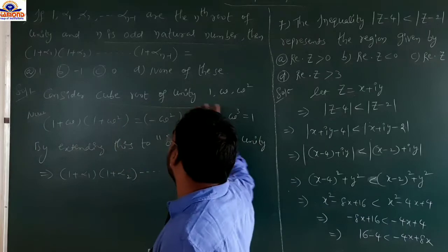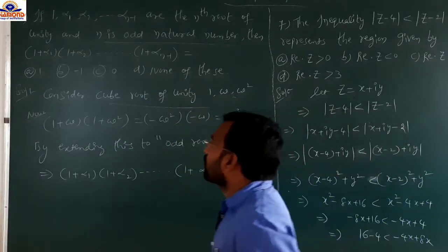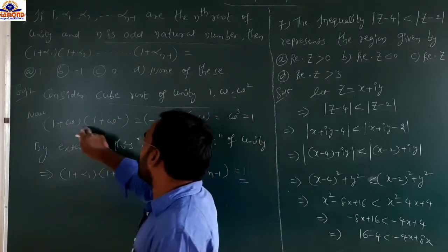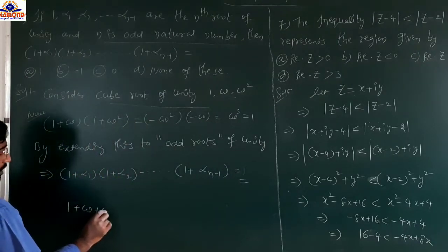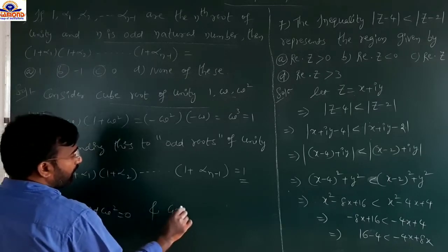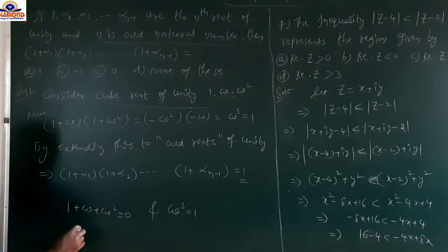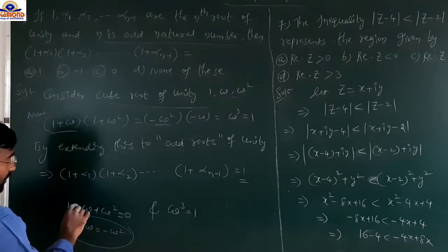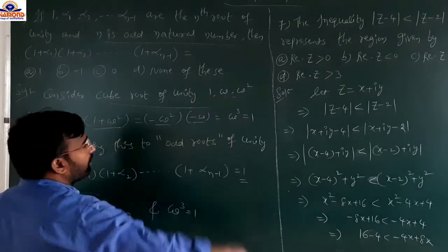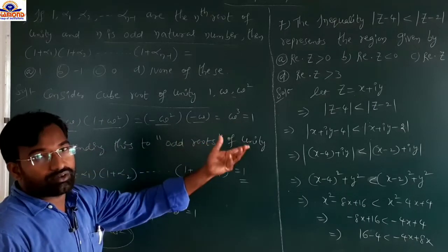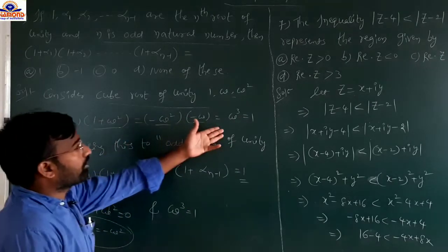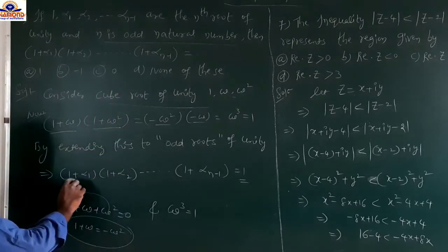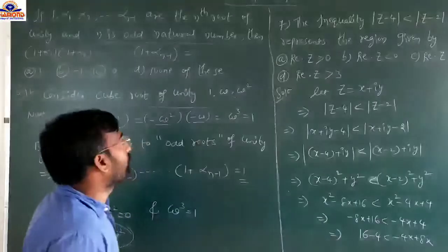Consider the cube roots of unity: 1, ω, ω². We know 1 plus ω plus ω² equals 0 and ω³ equals 1. So 1 plus ω equals minus ω², and 1 plus ω² equals minus ω. Multiplying: (1+ω)(1+ω²) equals (minus ω²)(minus ω) equals ω³ equals 1. Similarly, extending to odd natural number n, the product (1+α₁)(1+α₂)···(1+α_{n−1}) equals 1. So option is A.